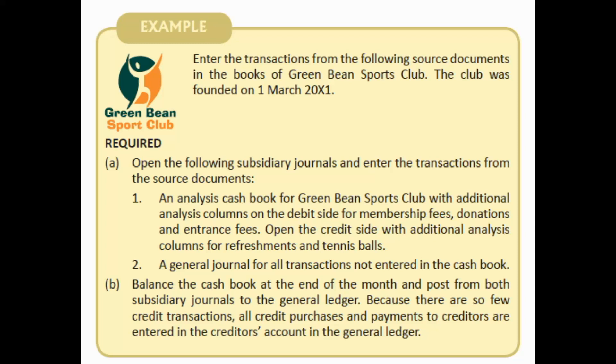Remember, when we started with nonprofit organizations, I said that because we have a lot fewer transactions in a club than in a normal trading account, we will not open all the subsidiary journals we normally open. That is why in this case we're just going to open the analysis cash book and a general journal. Transactions not entered in the cash book will be entered in the general journal, because you can enter any kind of transaction in a general journal — you simply state which account to debit and which to credit.